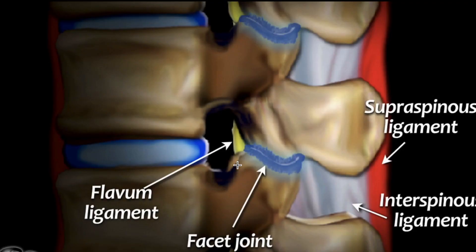After you identify the morphology of the fracture, the question is: is the posterior ligamentous complex injured or not? The posterior ligamentous complex includes anything from the ligamentum flavum, as seen in this picture, all the way back to the supraspinous ligament. All of that provides a lot of support on the posterior aspect of the spinal column.